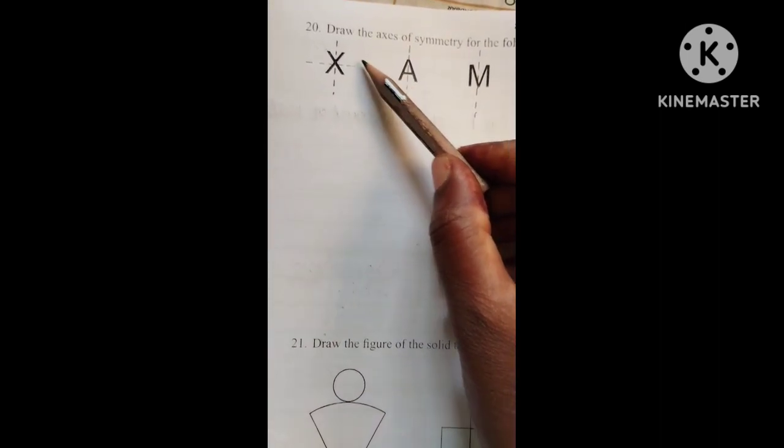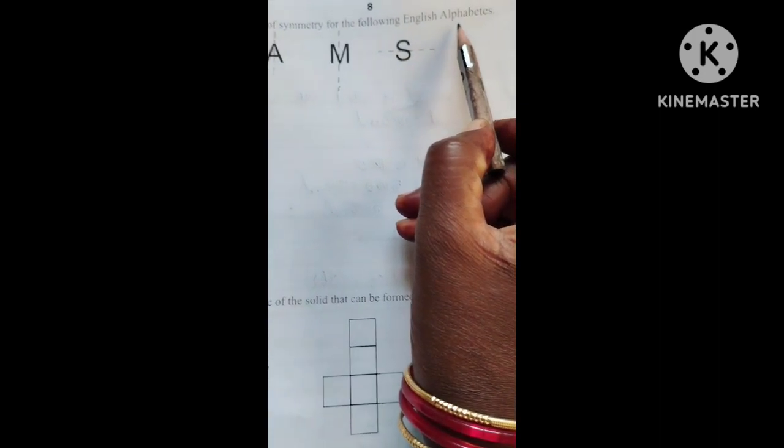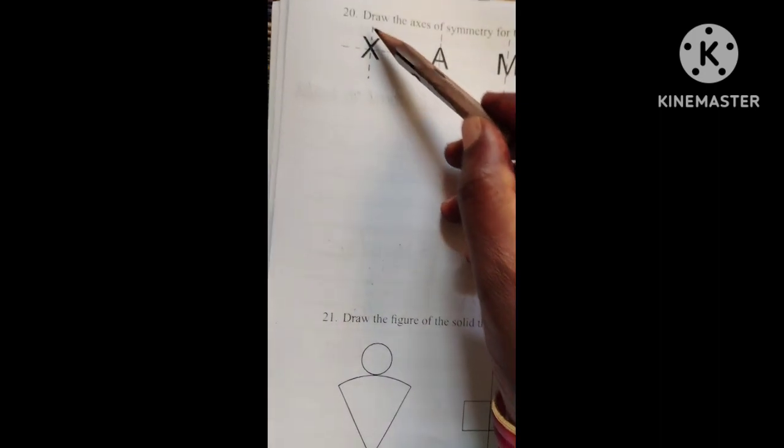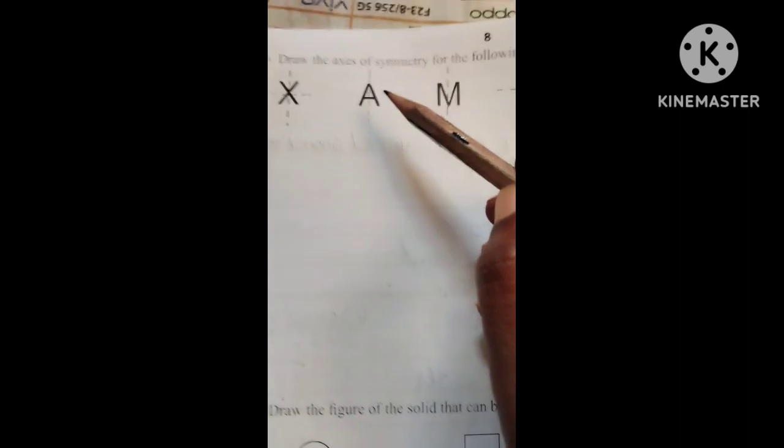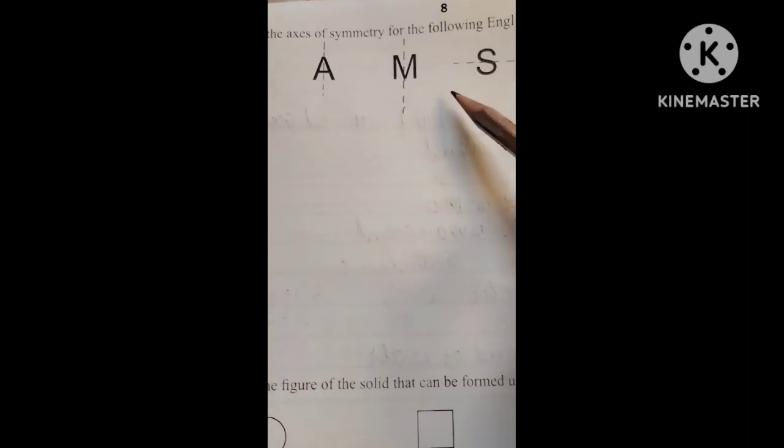Now, 20th question. Draw the axis of symmetry for the following English alphabets. See, first you want to write. In X, we have 2 symmetry lines. And A only we have 1 symmetry line. M also. And S also. Next one we have question.